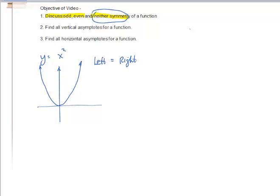This is called even symmetry. And it doesn't have to pass through the origin. It just has to be, if you cut the graph in half right down the y axis, you would see the left and the right looking like a mirror image.